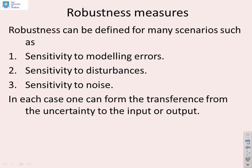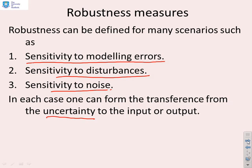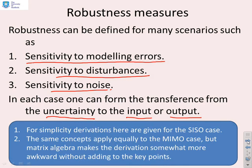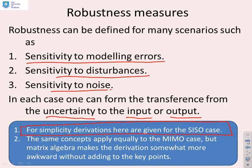What sort of uncertainty might we be interested in? You might want to know: what's the sensitivity to modelling errors or parameter errors? What's the sensitivity to disturbances? What's the sensitivity to noise? In each case, we can form a transfer function from the particular uncertainty chosen to the input or output, or pole positions. We are going to only do the SISO case. Predictive control is largely used for the multivariable case, but the algebra for the SISO case is straightforward, so we can illustrate the concepts quickly. Doing the algebra for the multivariable case gets a lot messier without adding to the key concepts.